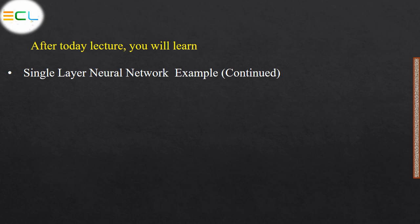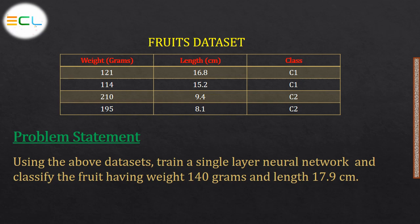We started solving an example of a single-layer neural network, and now in this part two we will continue with that example. In the previous lecture we considered a dataset consisting of four different samples with two attributes — weight and length — and a class label. The first two samples belong to class 1 and the other two belong to class 2. The problem statement is to train a single-layer neural network and classify a fruit with weight 140 grams and length 17.9 cm.